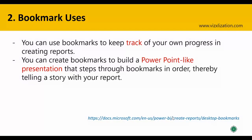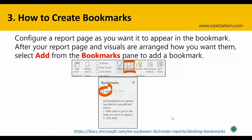How to create bookmarks — this is quite straightforward. First, configure a report page as you want it to appear in the bookmark. After the report page and visuals are arranged how you want them, select Add from the bookmarks pane. To activate the bookmarks option, go to the View tab in Power BI Desktop, select Bookmarks, and a new window pops up with the Add option.